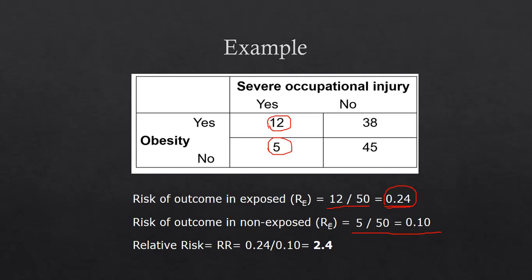And in order to come up with the relative risk, we will divide the exposed group to the non-exposed group. So 0.24 divided by 0.1. And that'll give you a relative risk for this cohort study as 2.4.